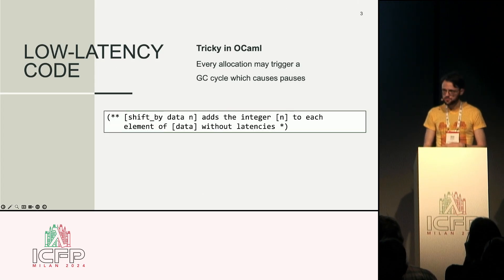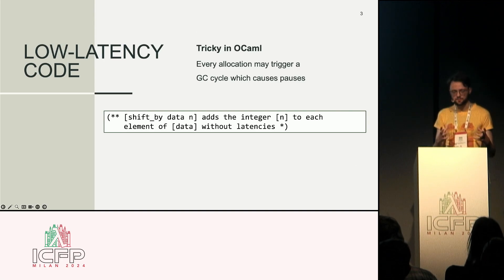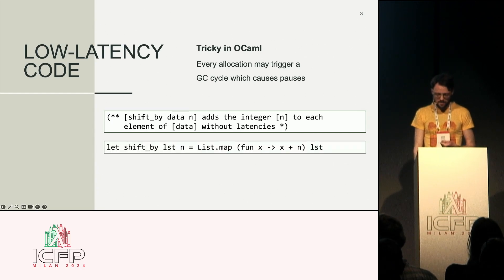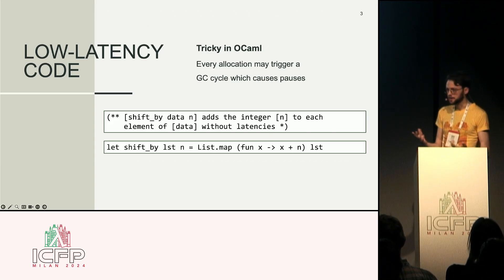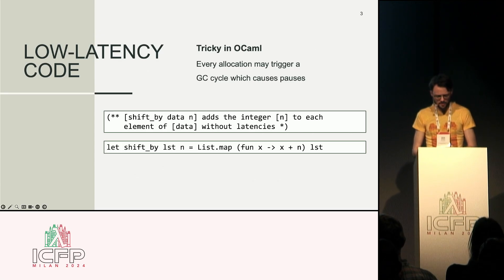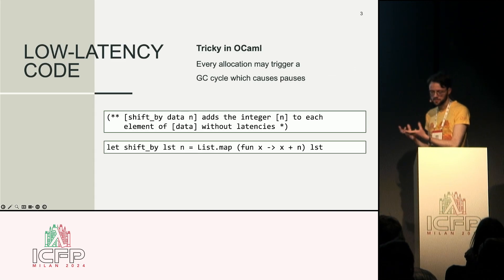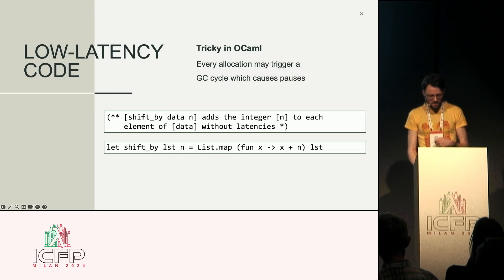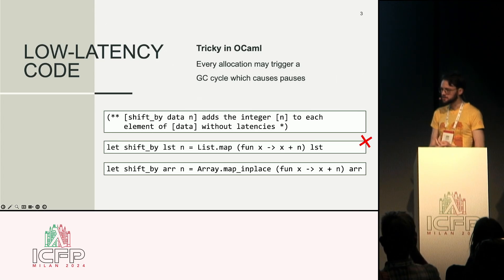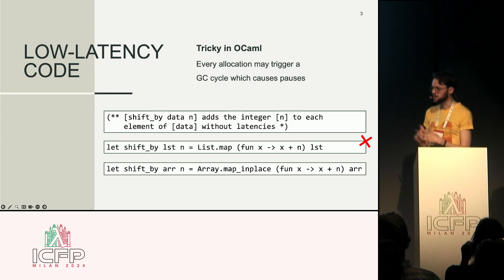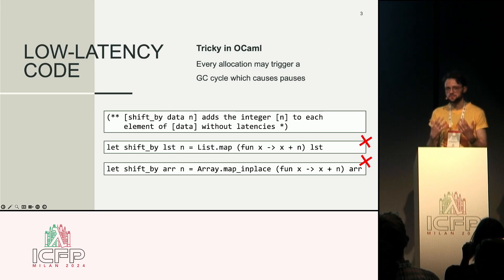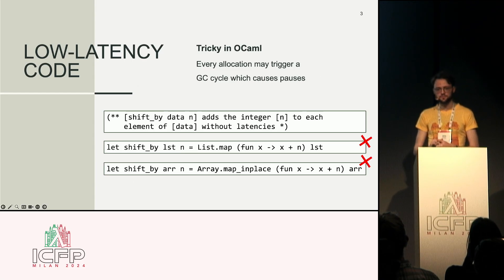To give one example, let's implement a really simple function. We get some data — a bunch of integers — and we want to add one integer to each of them without latencies. The first implementation could use list.map, but lists in OCaml are immutable, so list.map needs to allocate a whole new list, which can cross GC pauses. So let's use an array instead and map in place over it — no new array allocation needed. However, this is still not free from allocations, because there's one allocation hidden in plain sight: the closure itself would need to be allocated.